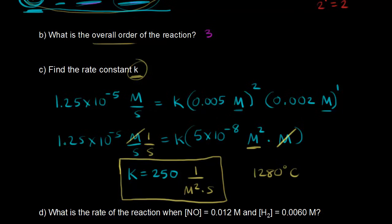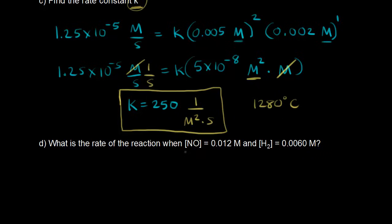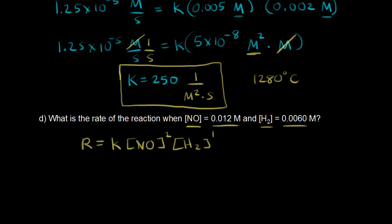Finally, part D: what is the rate of the reaction when the concentration of nitric oxide is 0.012 molar and the concentration of hydrogen is 0.006 molar? We use our rate law: rate = K × [NO]² × [H₂]¹. Our goal is to solve for the rate.